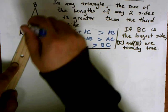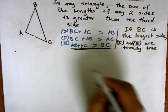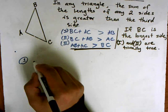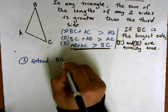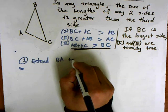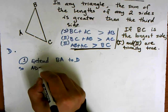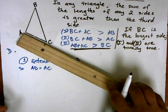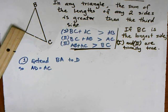I'm going to extend BA, and I'll write this down in just a minute. So in my first step I am going to extend BA to a new point D, so that AD equals AC. I use the ruler here to mark the length of AC and then extend that length along BA.